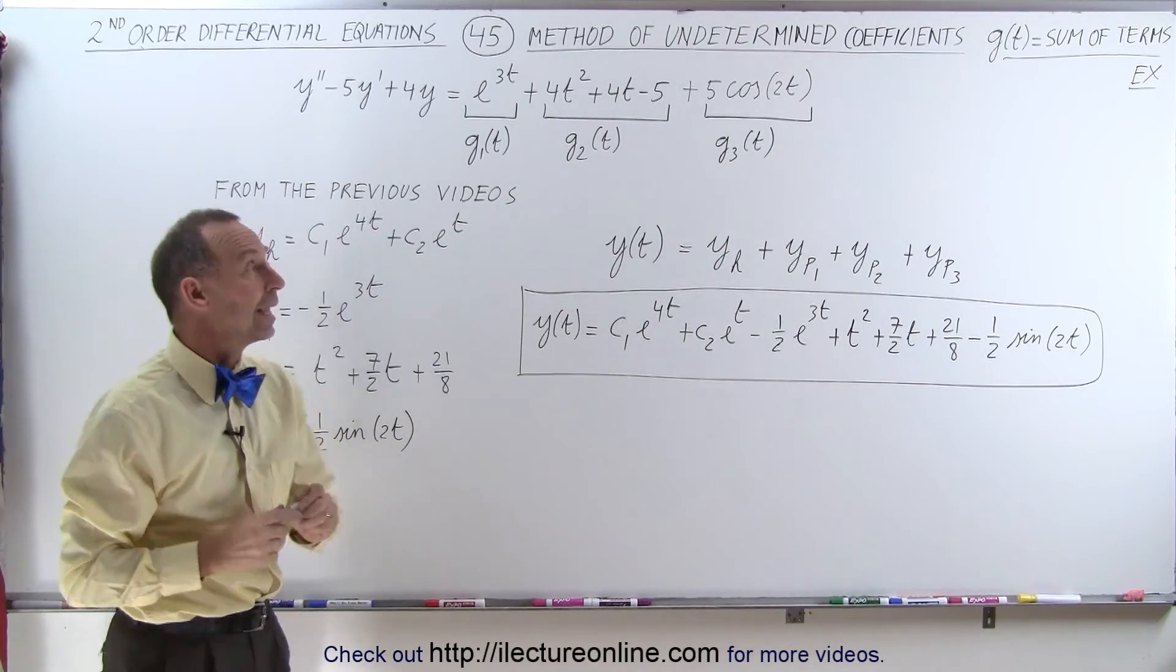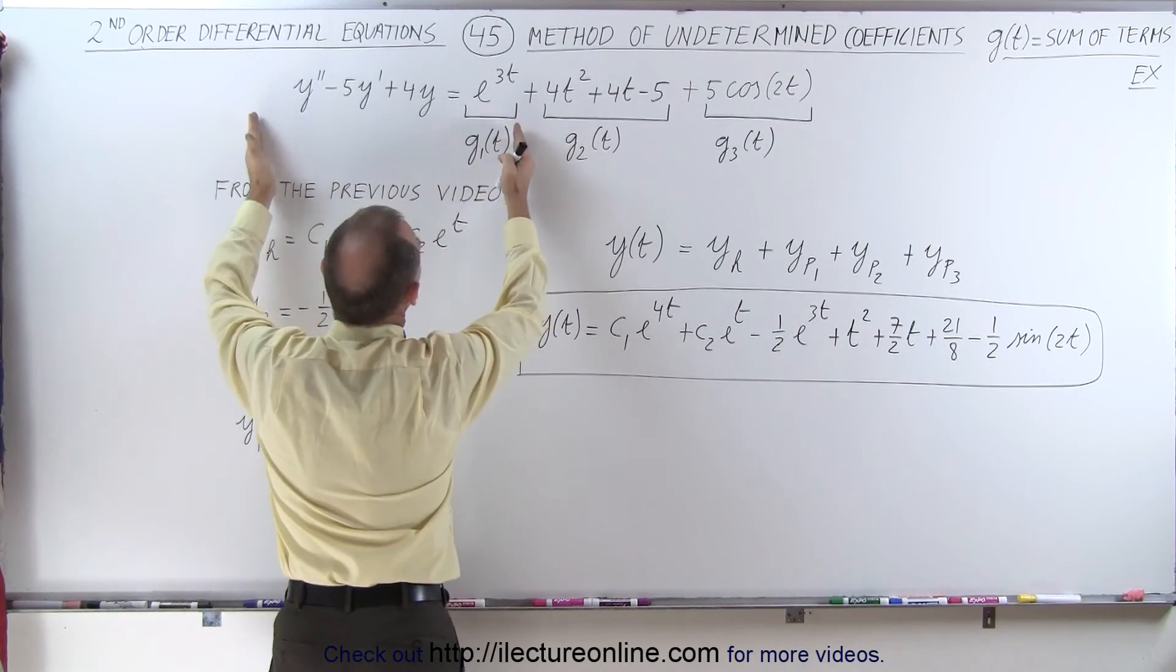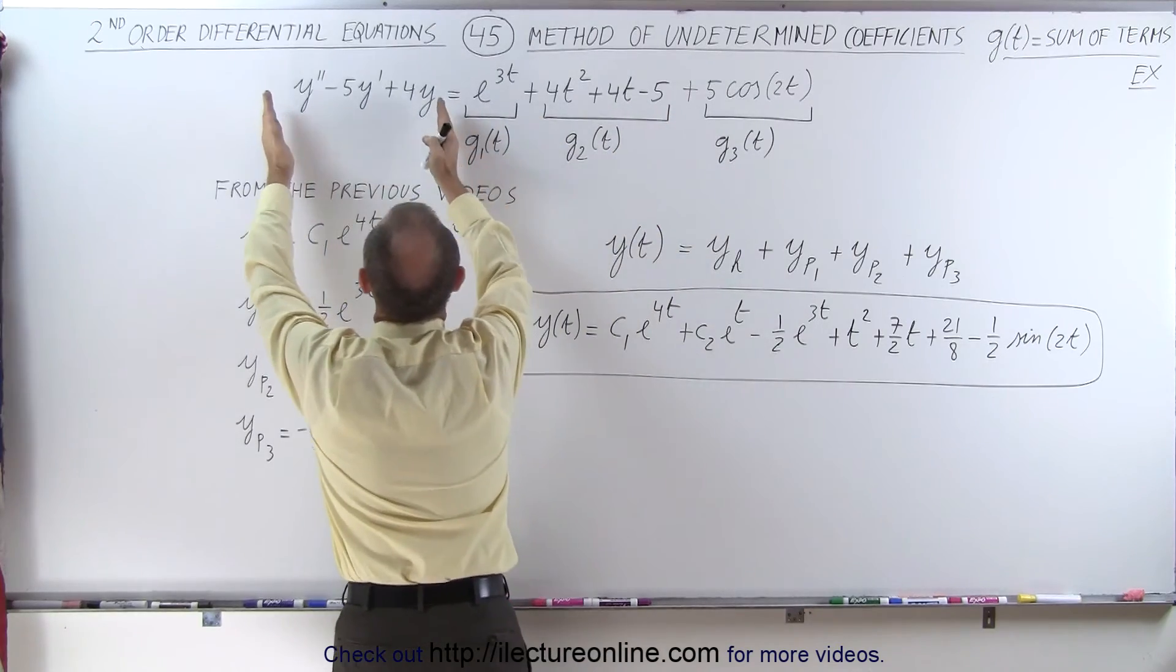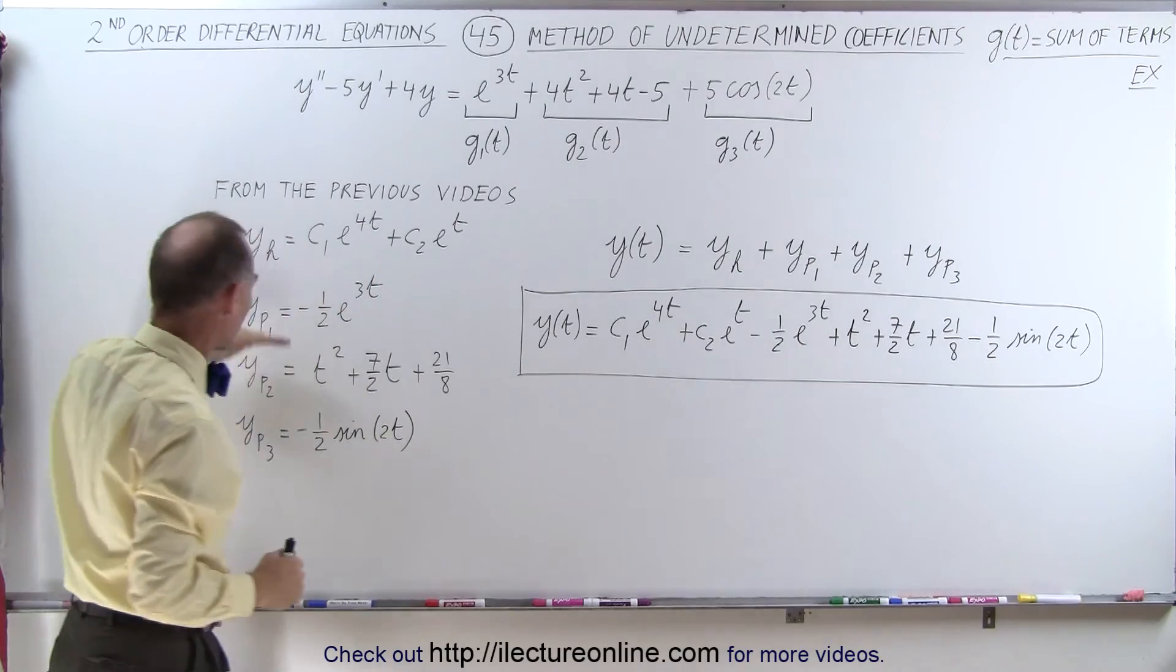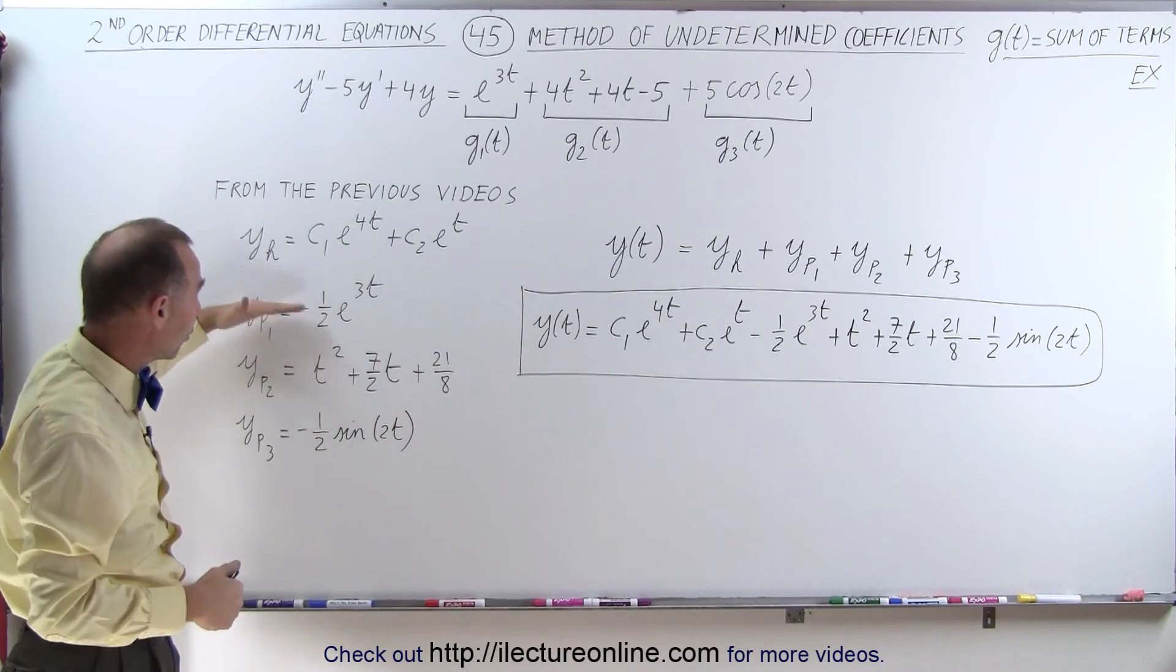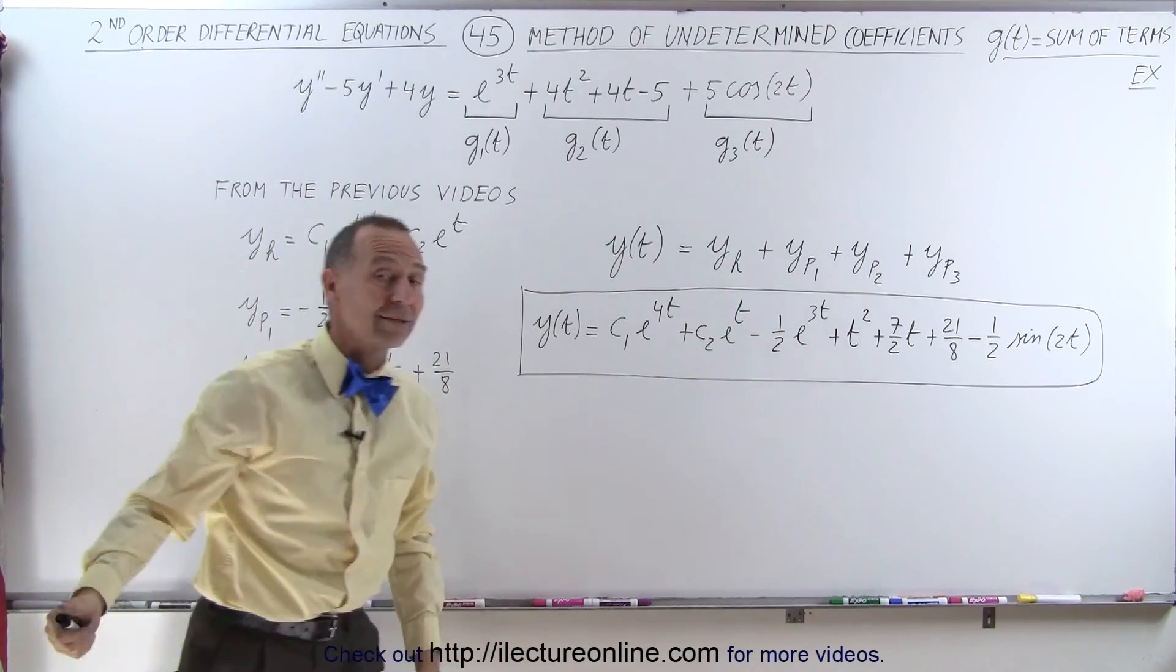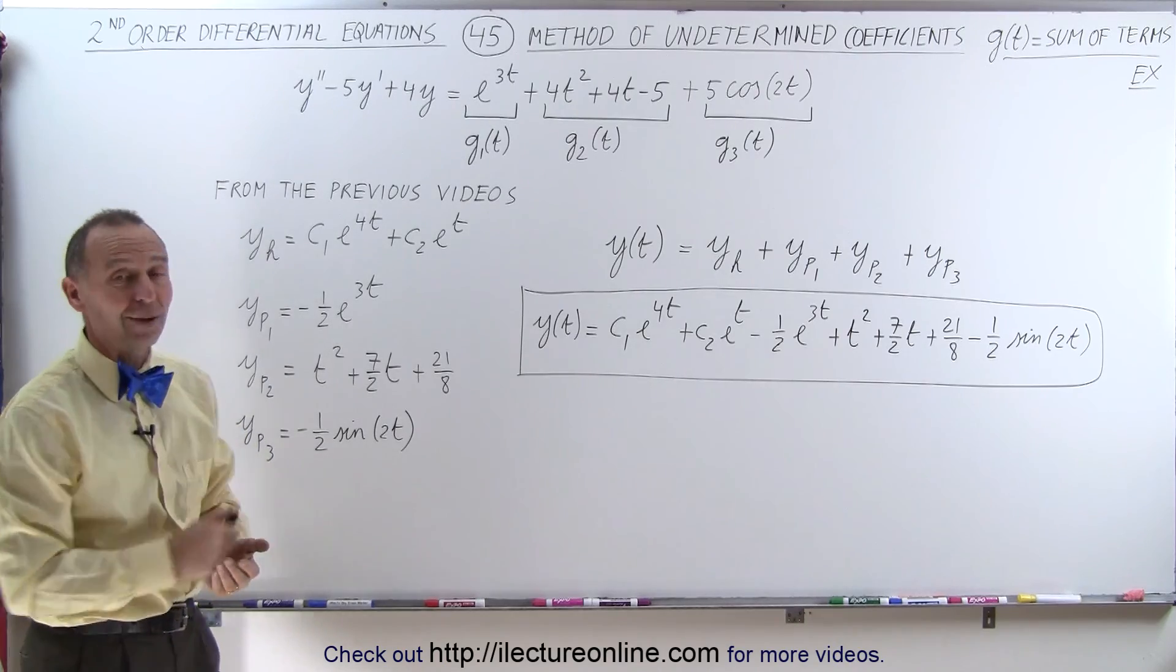But again, we can take it each separately. We take this, set it equal to that, solve for the particular solution. Take this, set it equal to that, solve for the particular solution. Take this, set it equal to this, solve for the particular solution. Here are the three solutions. If you want to remember how to do that, go back to the previous videos where we did these three examples, and then simply add them all together. And that becomes fairly simple in that respect. That's how it's done.